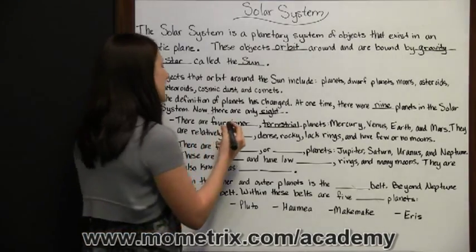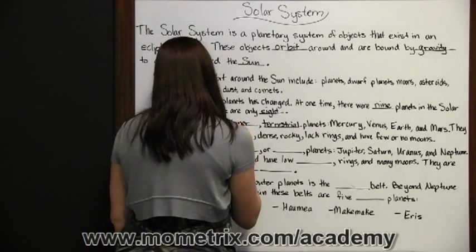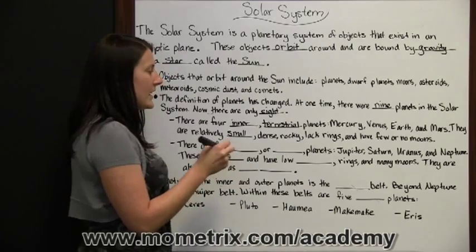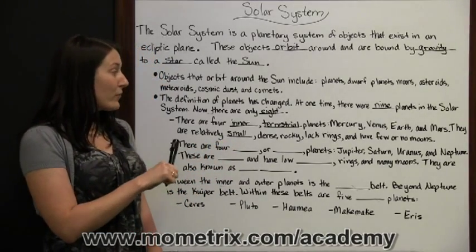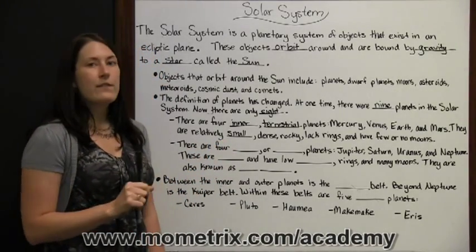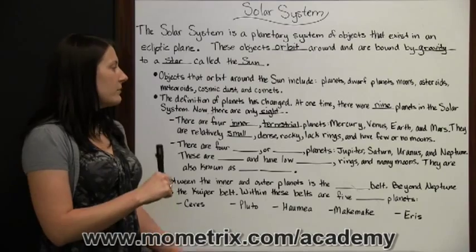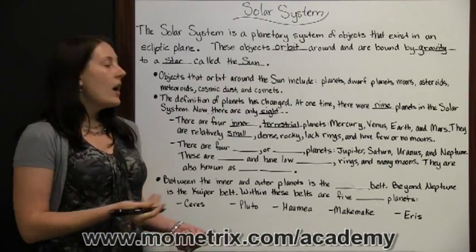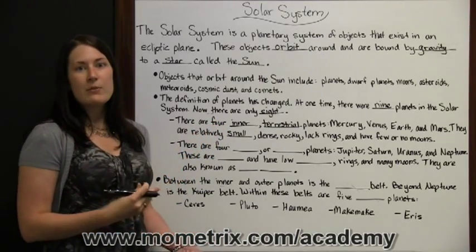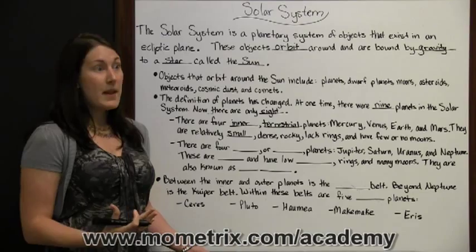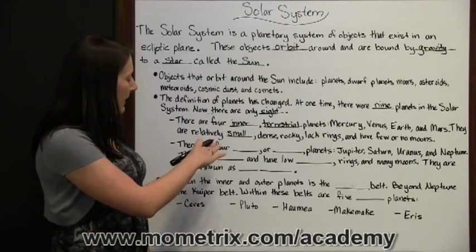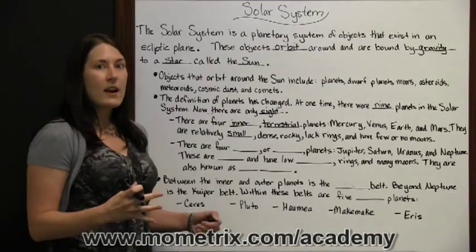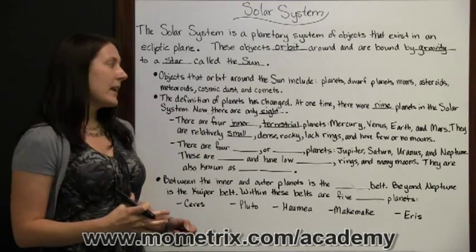The inner planets are relatively small, dense, and rocky. They lack rings and have few or no moons. Earth has a moon, but not all of the inner planets have moons. These are land planets — made more of solid material.